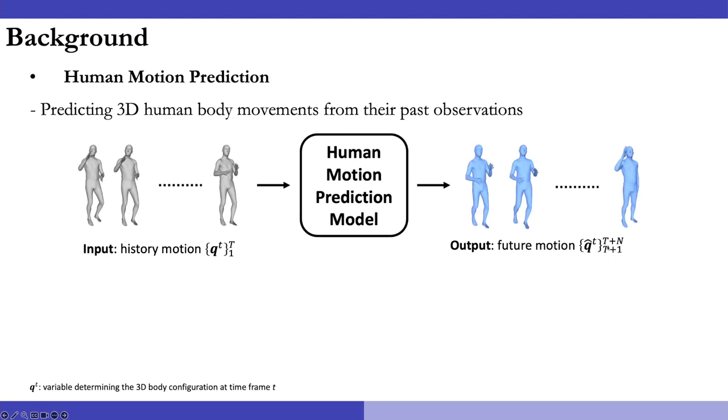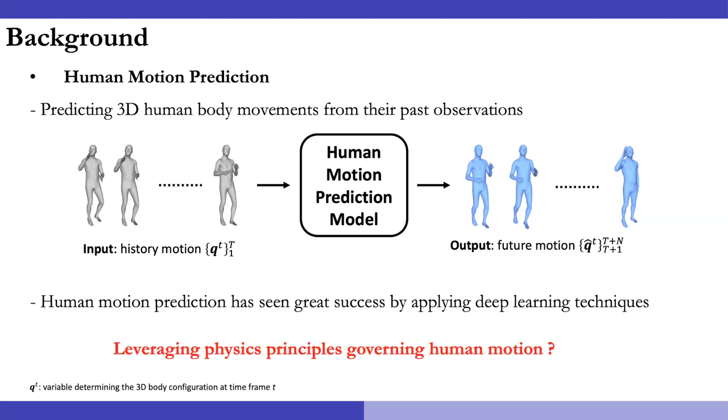Recently, given increased amounts of motion capture data and advanced deep learning models, applying deep learning techniques to human motion prediction has seen great success. However, we know that human motion complies with fundamental physics principles, so can we leverage them to improve the model performance?